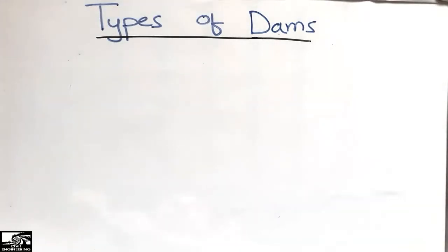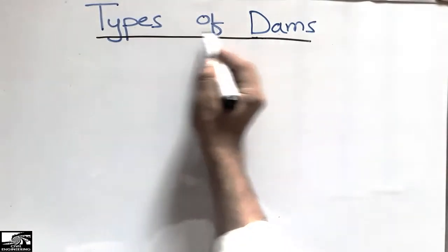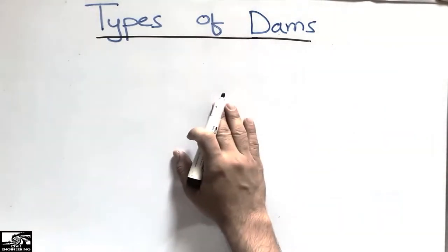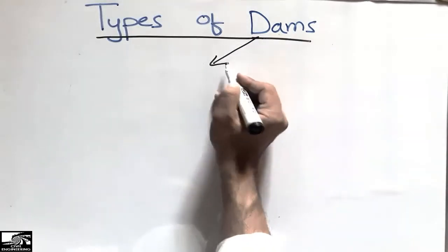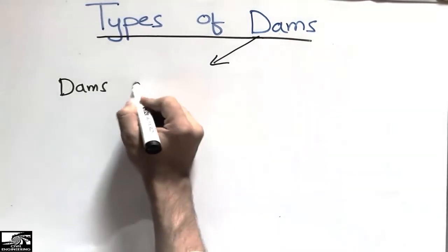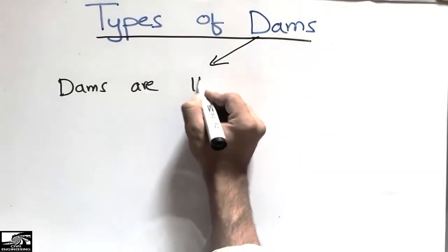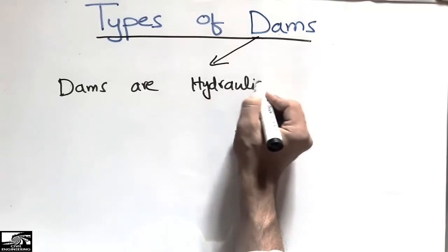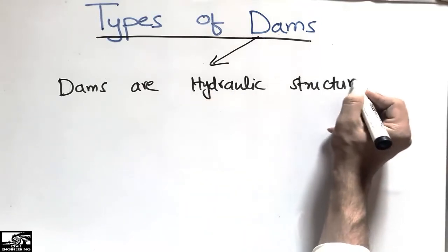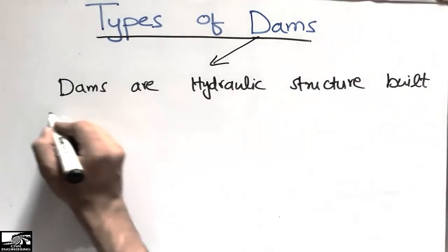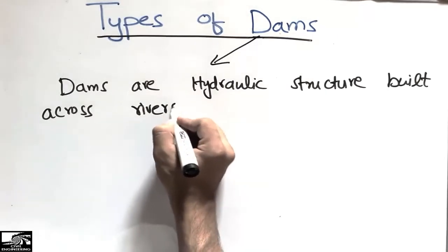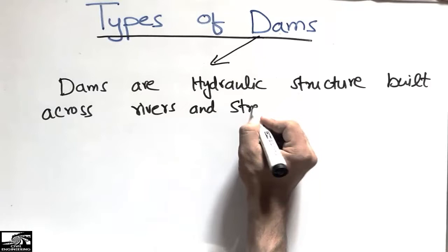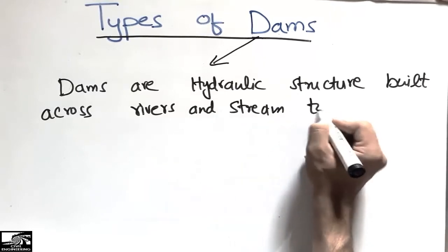Hello guys, welcome back to the civil engineering YouTube channel. Please subscribe to our channel for daily civil engineering videos. Today our lecture is about the types of dams. Here I will discuss the various types of dams according to different classifications. First of all, let's come to the definition of the dam. Dams are hydraulic structures built across rivers and streams.